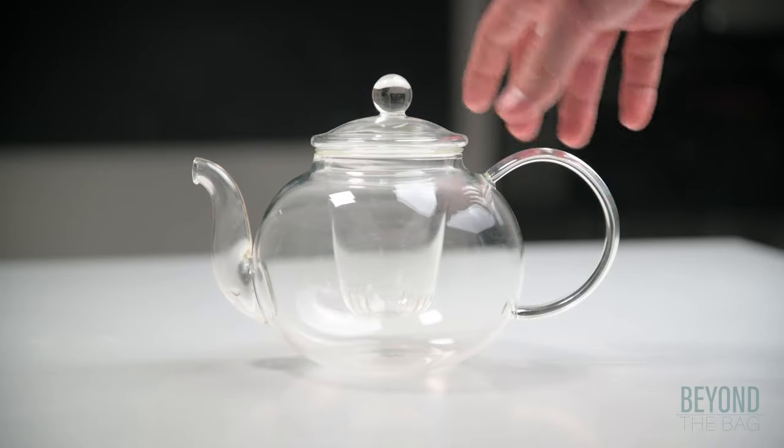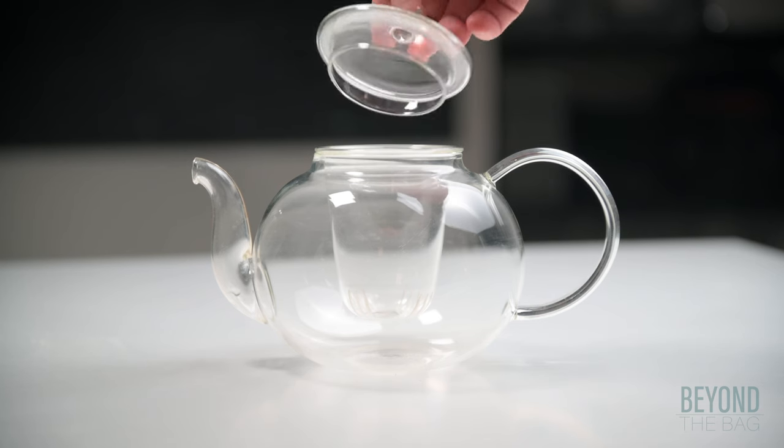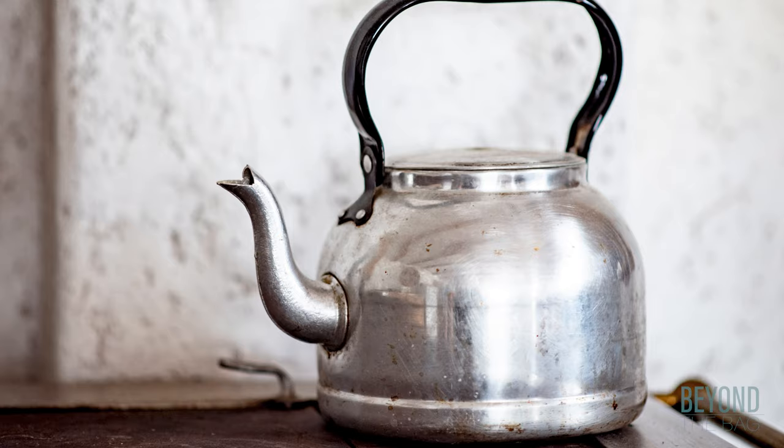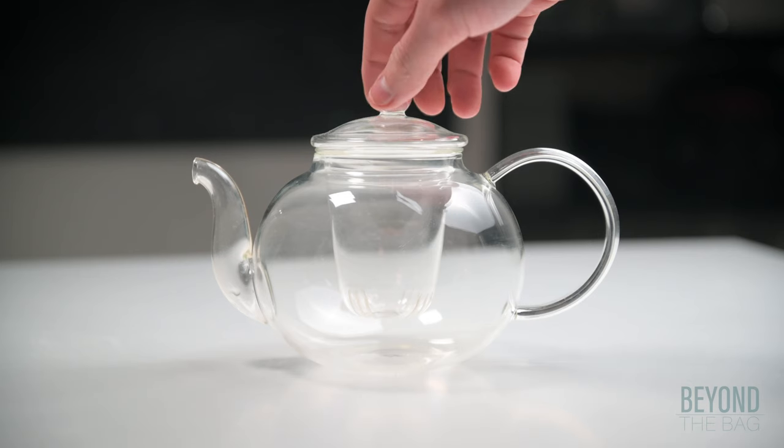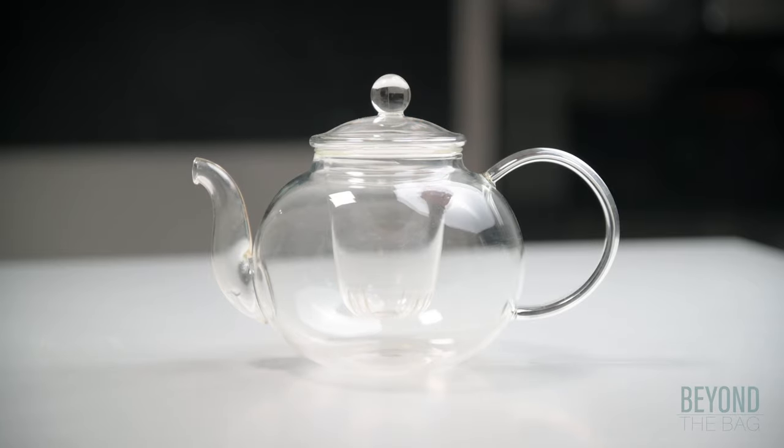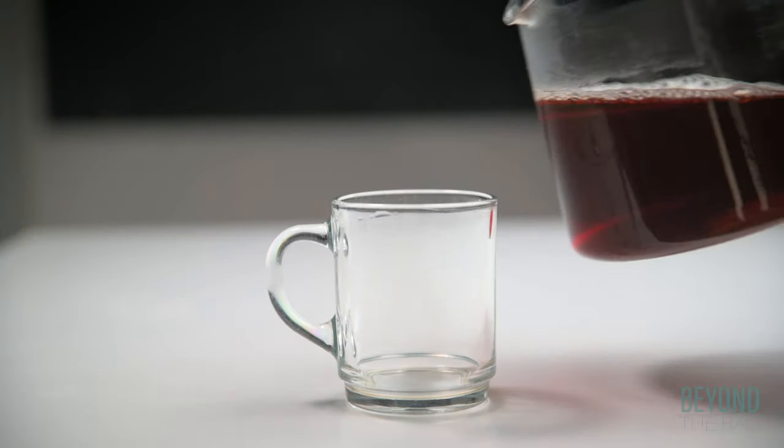The first detail you should look at is the material the teapot is made out of. Teapots come in a lot of different materials from glass, ceramic, porcelain, and even steel. Having used these different styles I have found glass to be far and away the best all-around material to go with.